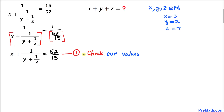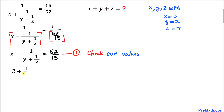Now we are going to verify these are valid values by plugging in x equals 3, y equals 2, and z equals 7, and checking whether the left hand side equals the right hand side. Substituting: 1 divided by 3 plus 1 divided by (2 plus 1 over 7). The question is whether this equals 52 divided by 15.